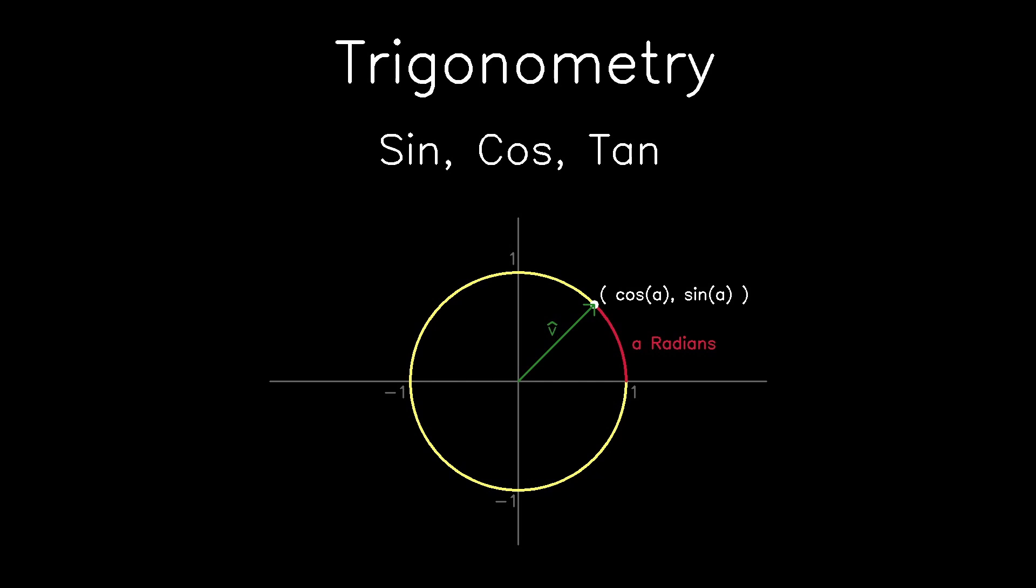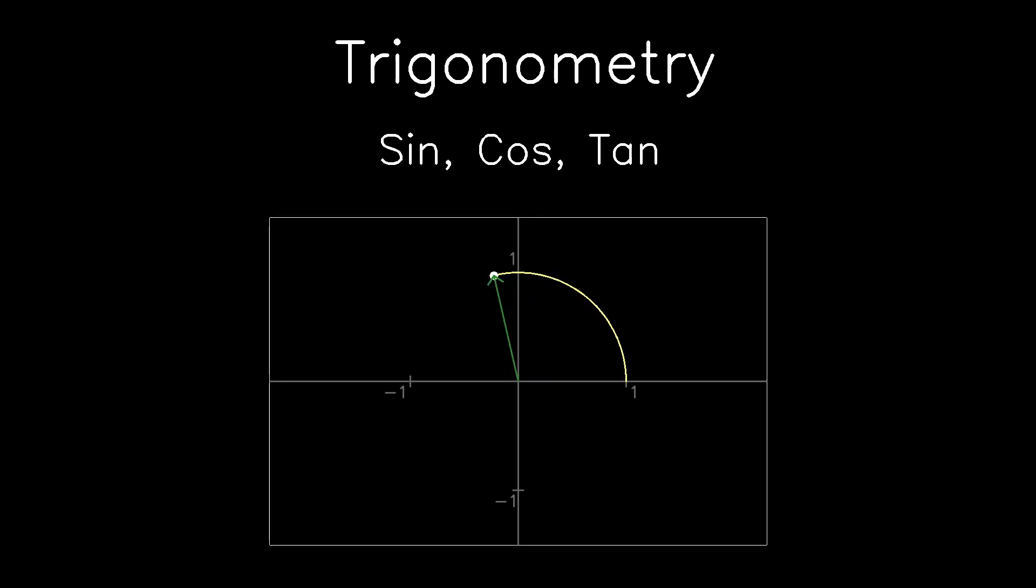In this video, we're going to cover the basics of how trigonometry works. We're going to start off zoomed in on the Cartesian plane between negative 1 and 1. We're going to get the unit vector and then rotate it all the way around till it draws out the unit circle.